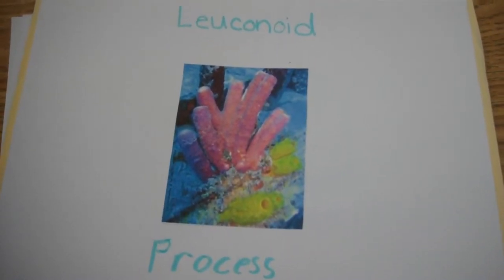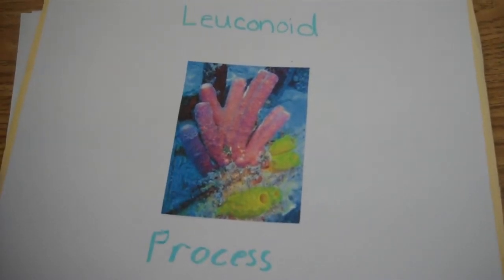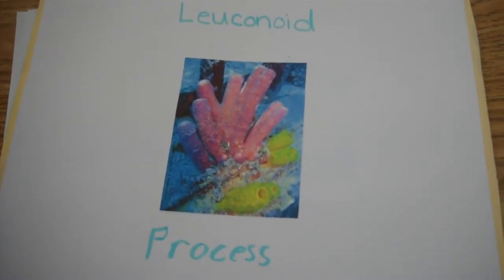This is how a sponge eats. A sponge gets its food from the hole on top of its head. To get rid of its waste, it goes through its pores and gets carried away by water currents.